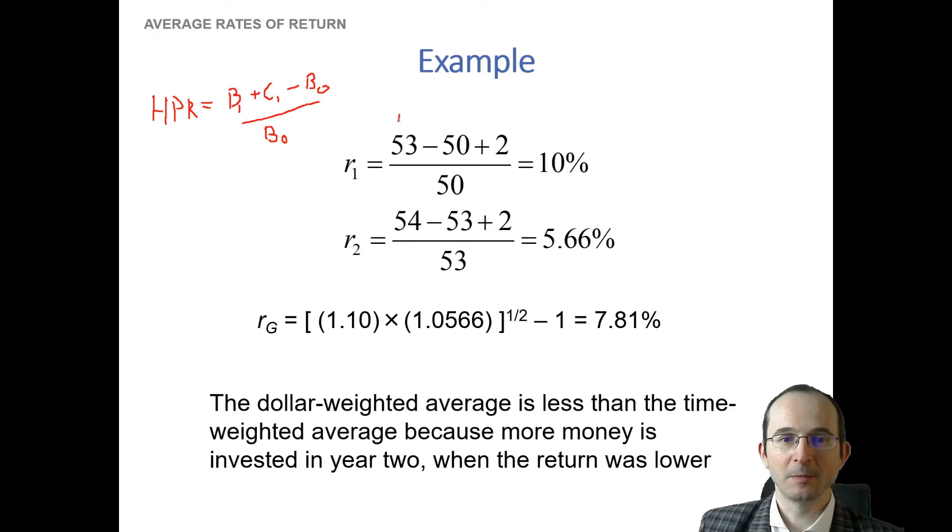So if we just plug those three things in, you can see that this 53 is the value of the asset at the end of the period. That's what the share of our stock is worth at the end of year one. 50 is what it was worth at the beginning of year one. Two is the cash flow that we received at the end of year one, because we will assume that the dividend gets paid at the end of the year. You know, if it weren't, we might need to compound it at whatever the interest rate was. But for the sake of simplicity, let's just say the dividend is paid at the end of the year. And then, of course, we divide by, again, the price of the asset at the beginning of the period. And if we calculate that out, we see that the holding period return in the first year, in other words, from year zero to year one, is 10 percent.